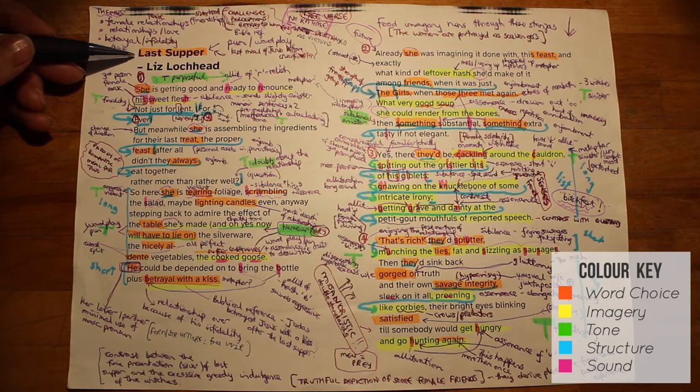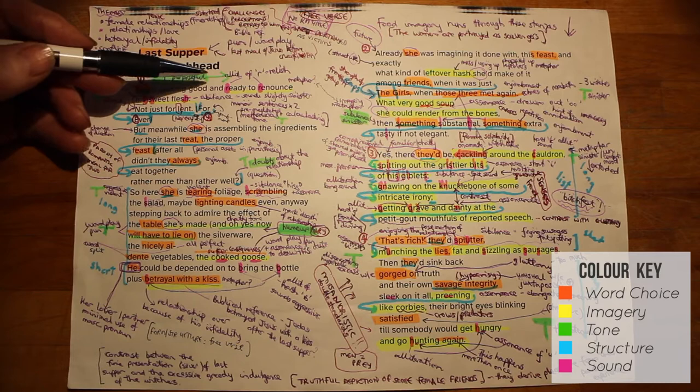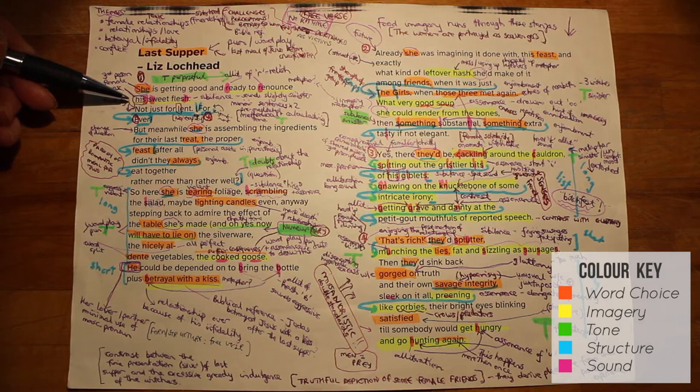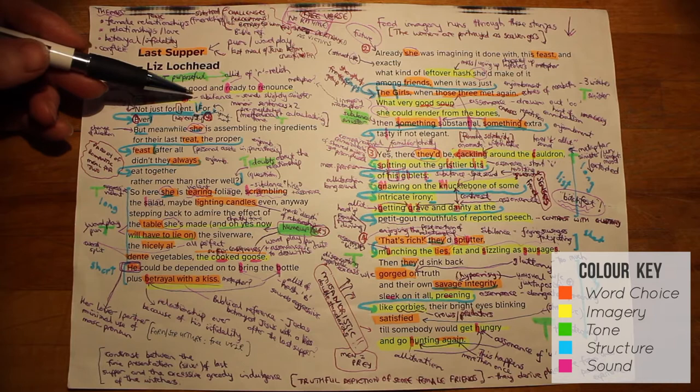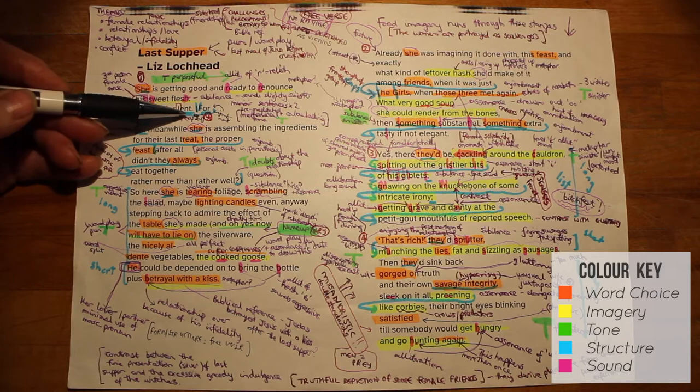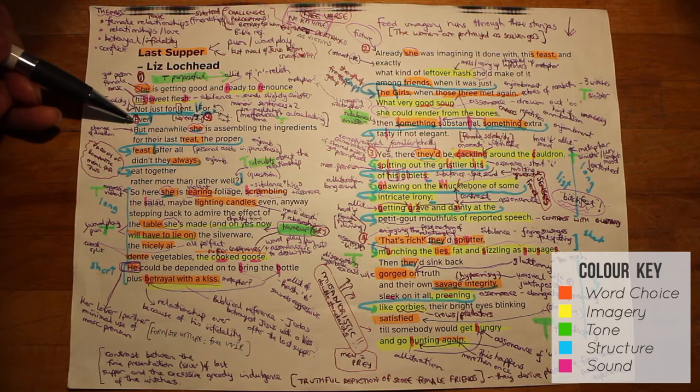In the first stanza, we immediately start with a third-person female pronoun. She is getting good and ready to renounce. The alliteration of the R here almost suggests a hint of relish. Then there is also a metaphor whereby the giving up of the relationship is seen to be giving up his actual flesh. This image is further enhanced by the sibilance in his sweet flesh, which sounds distinctly sinister. We wonder what plans she has for him. Then there's another religious reference, Lent, the time that you give up things, which highlights the fact that she is going to be giving up her relationship with him. There's then a caesura here, for and enjoyment, ever. So a lovely bit of structure there that you could comment on. There are two minor sentences and the fact that the ever appears on its own really emphasizes that this is final.